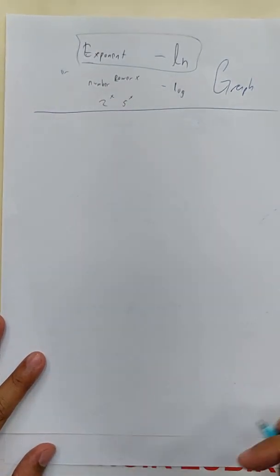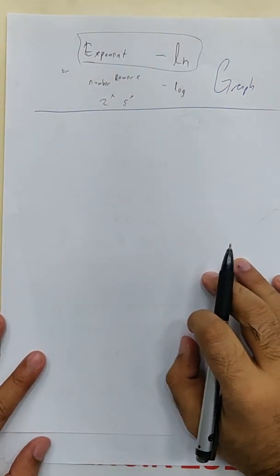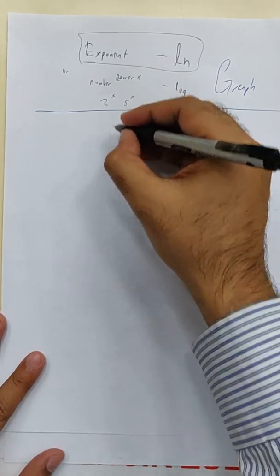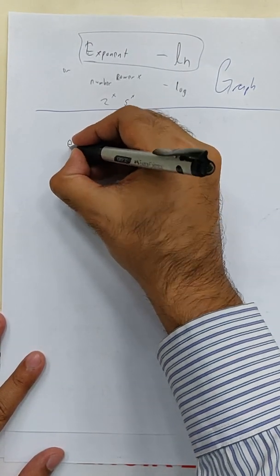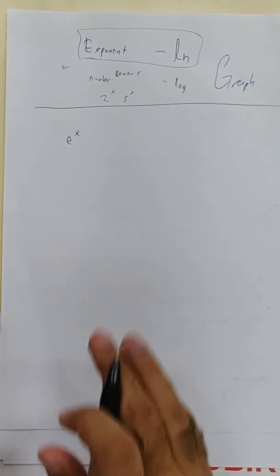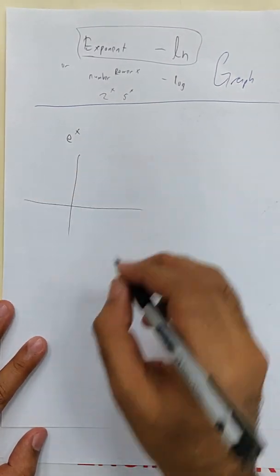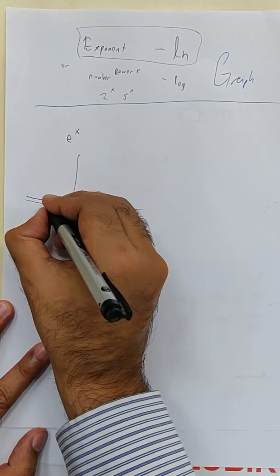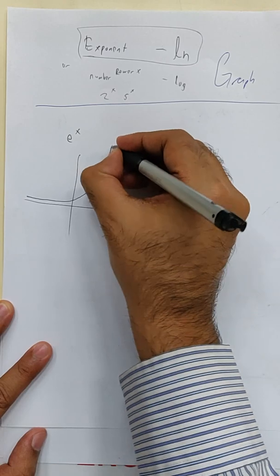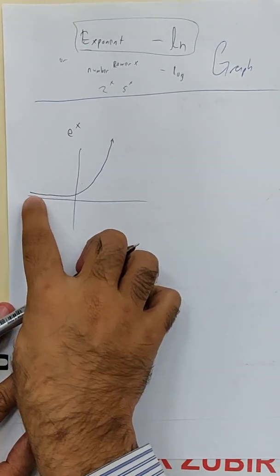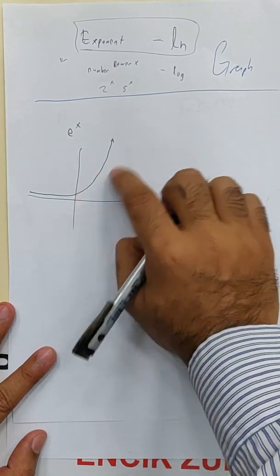Okay, so let's begin. I'm going to teach you as simply as possible. Let's start with e^x. e^x is the exponential function. How does the graph of exponent look like? It goes up. On the negative side, it stays low. On the positive side, it suddenly rises up.